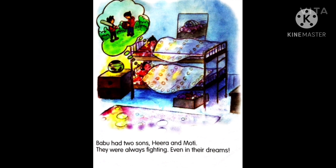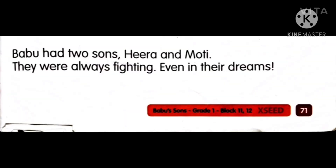Now let us see what happened. Can you see the characters — what are they doing? They are sleeping. Babu had two sons, Hira and Moti. They were always fighting, even in their dreams. So there are three characters: one father and two sons. Hira and Moti are sons of Babu, and what do they do? They always fight — even in their dreams. Can you see they are fighting over a ball and a bat?